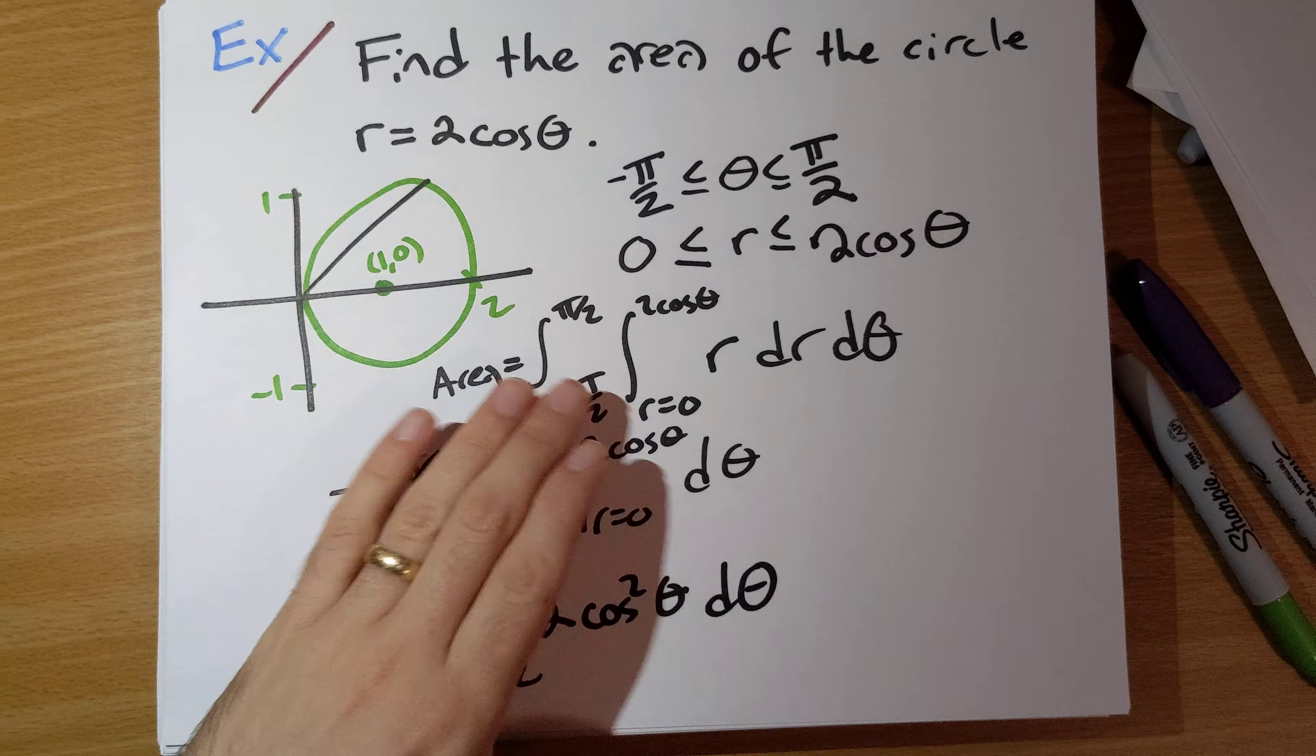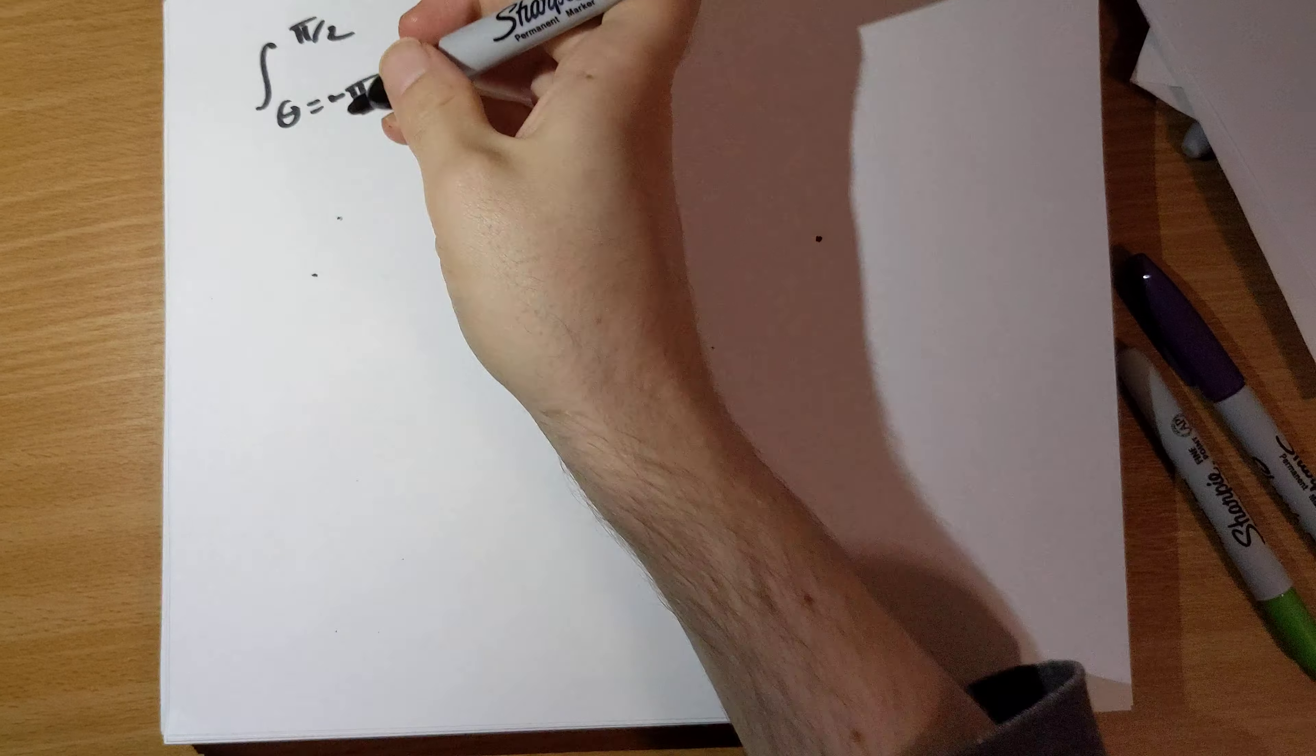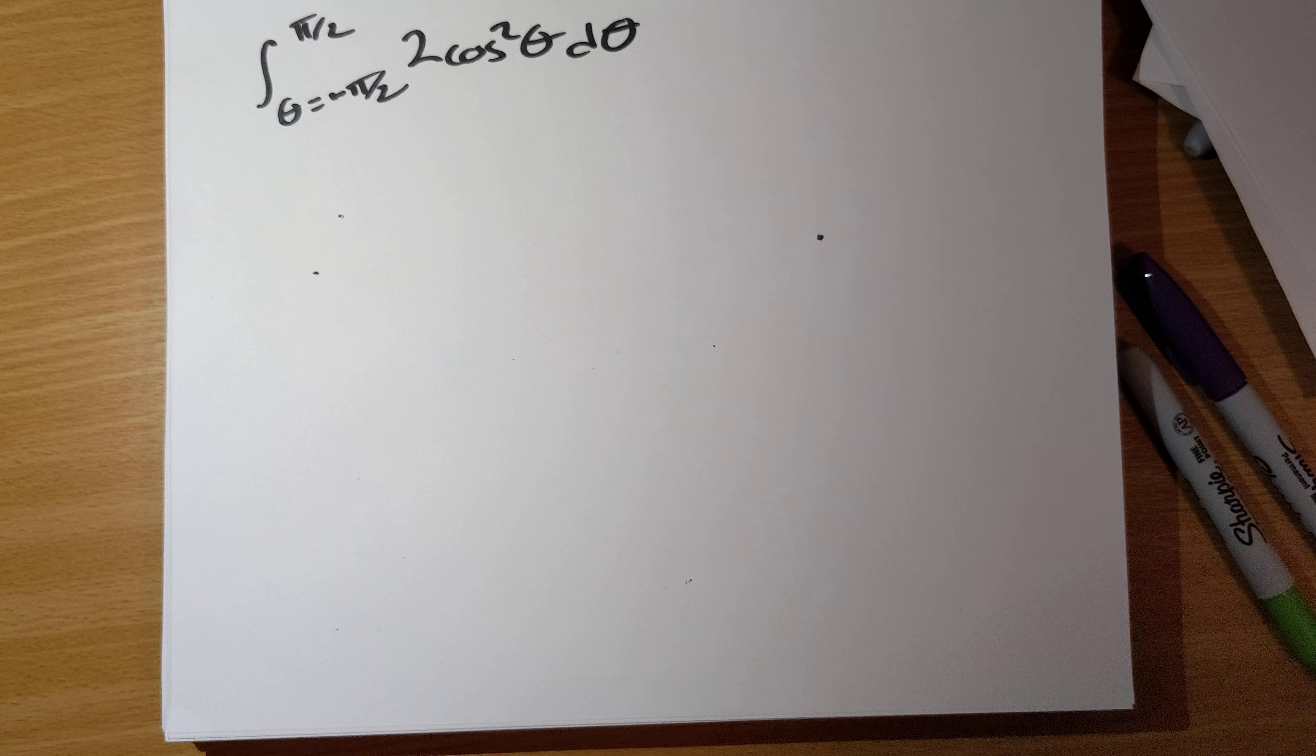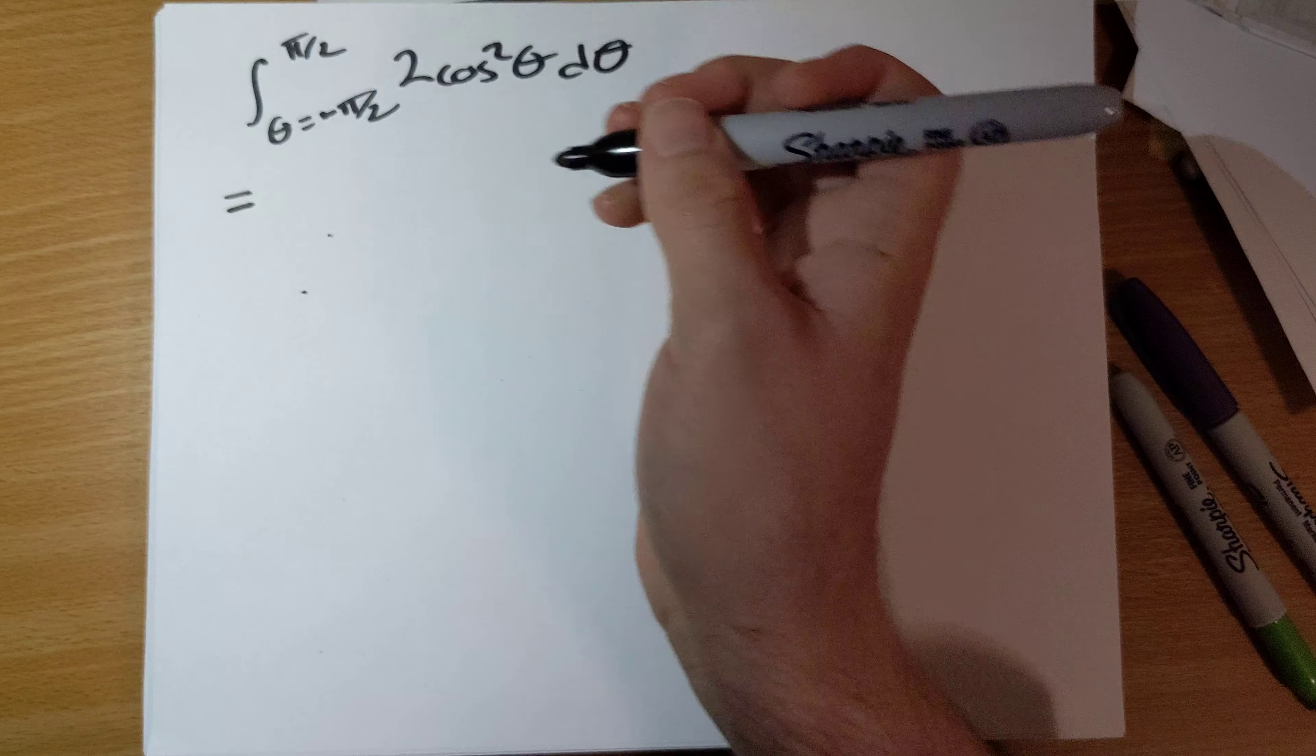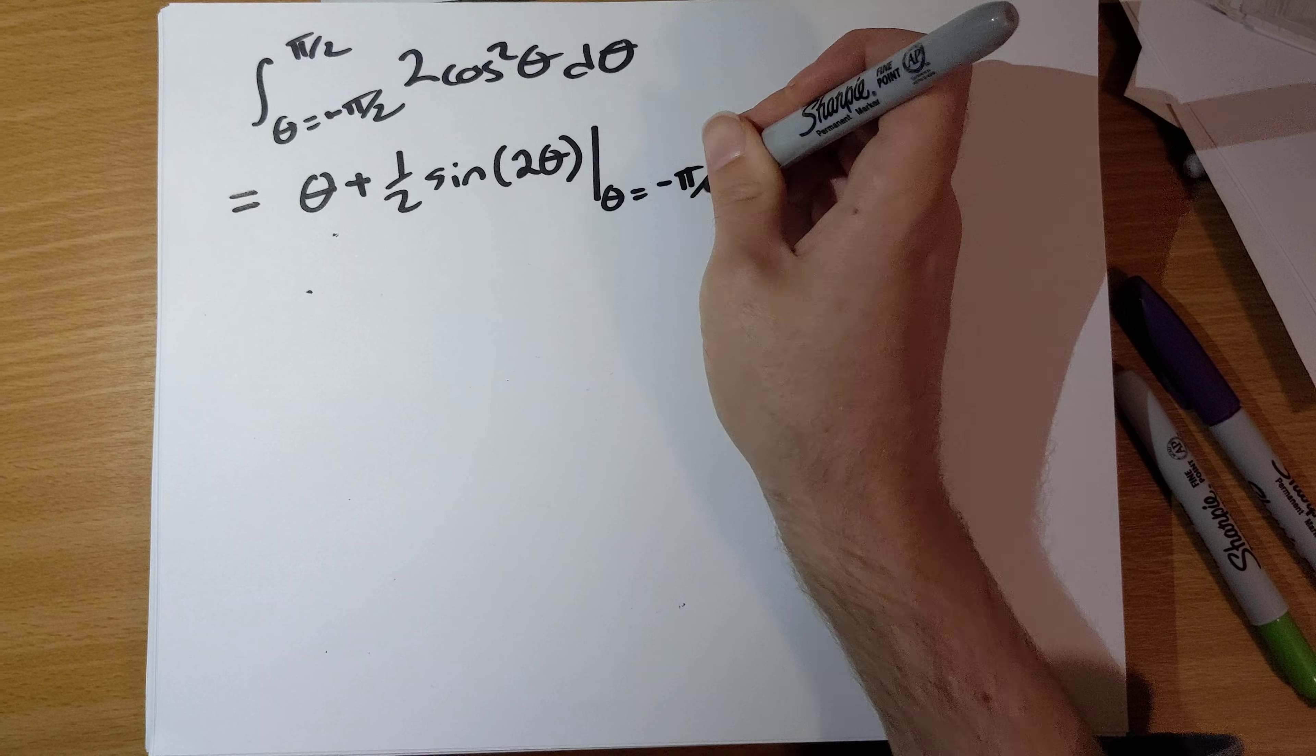So all we have to do now is integrate 2 cosine squared θ dθ. The antiderivative of 2 cosine squared θ is going to be θ plus 1/2 sine of 2θ. Plug in θ from negative π over 2 to π over 2.